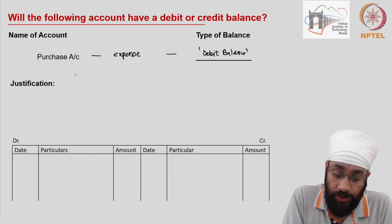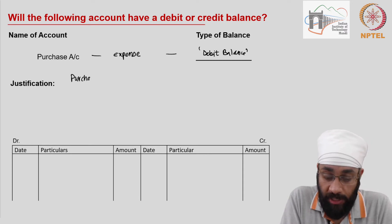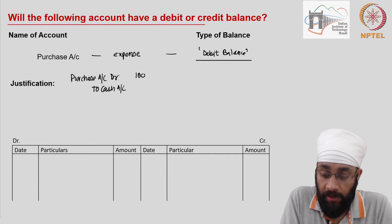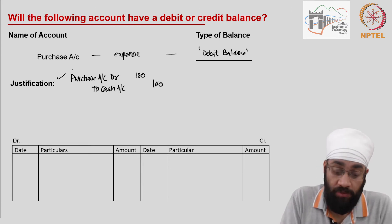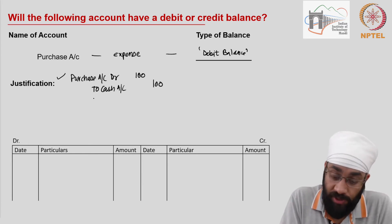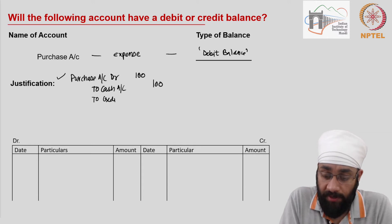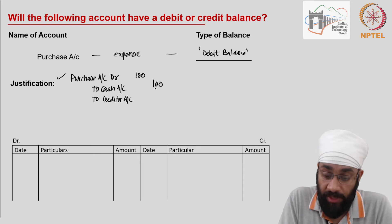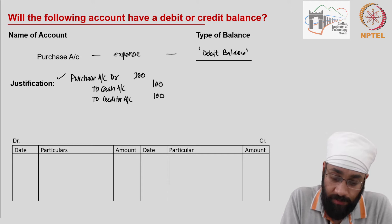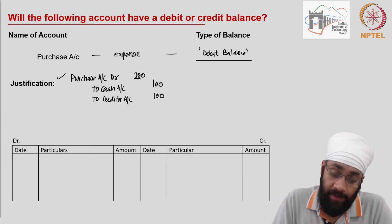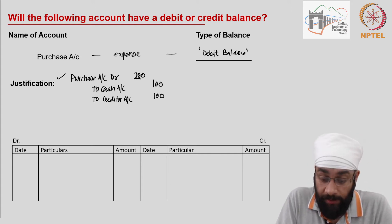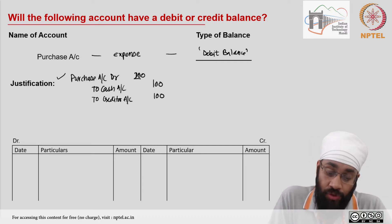When you purchase, what is the transaction? The transaction is: purchase account debit to cash or bank — let's say 100. This is a cash purchase. You could also purchase on credit; when you purchase on credit, you write the name of the creditor or vendor. So let's make this 100 and this becomes 200 — a complex journal entry.